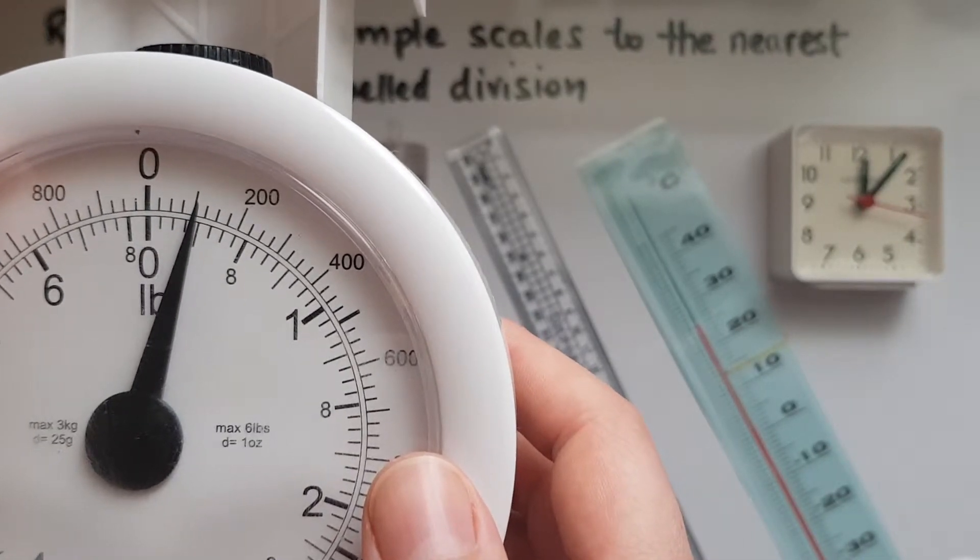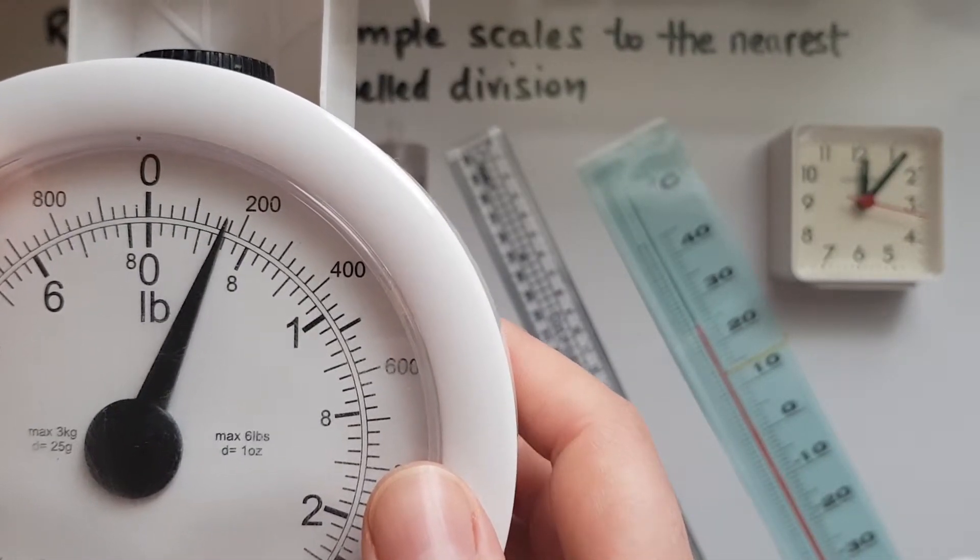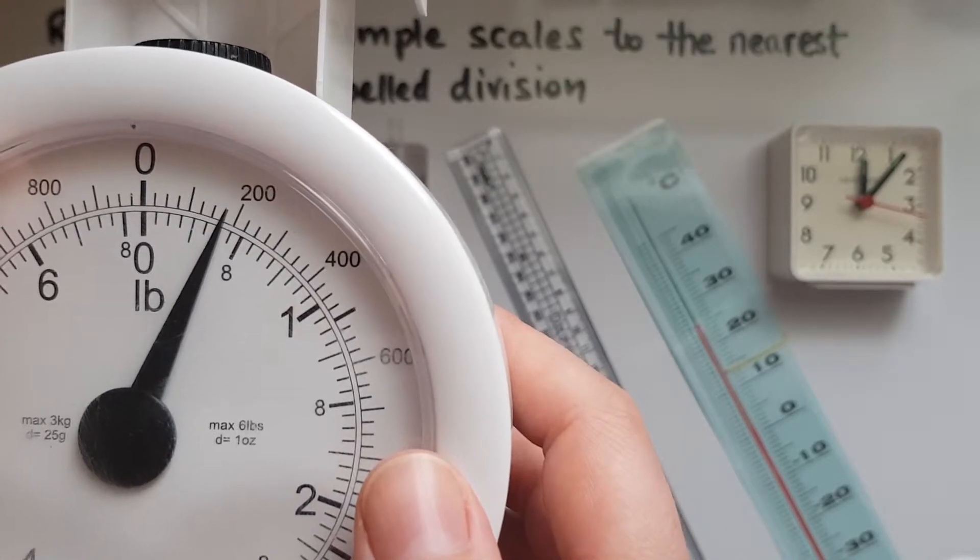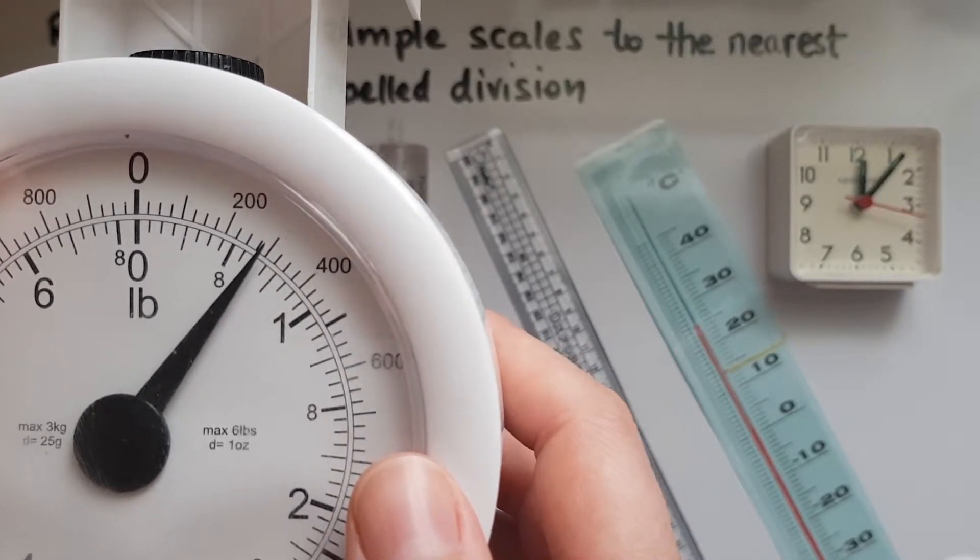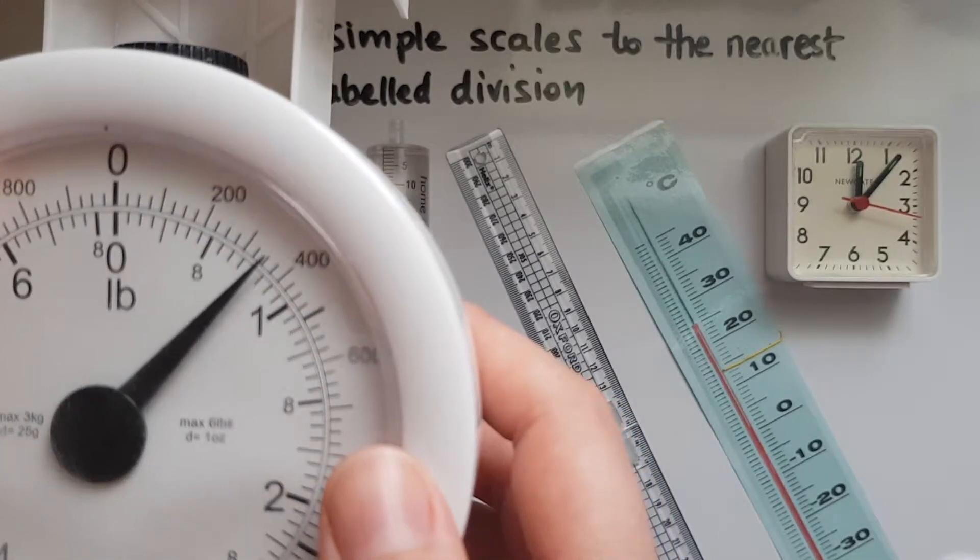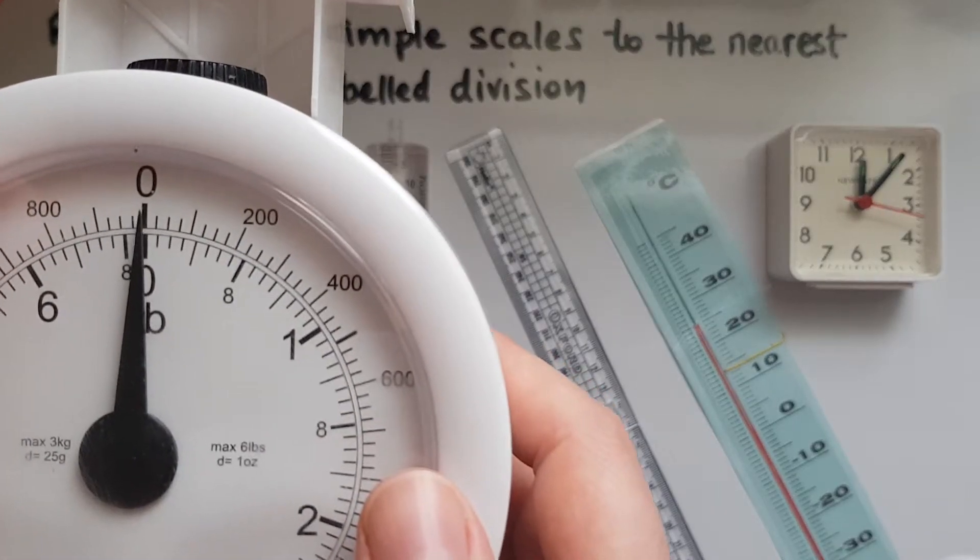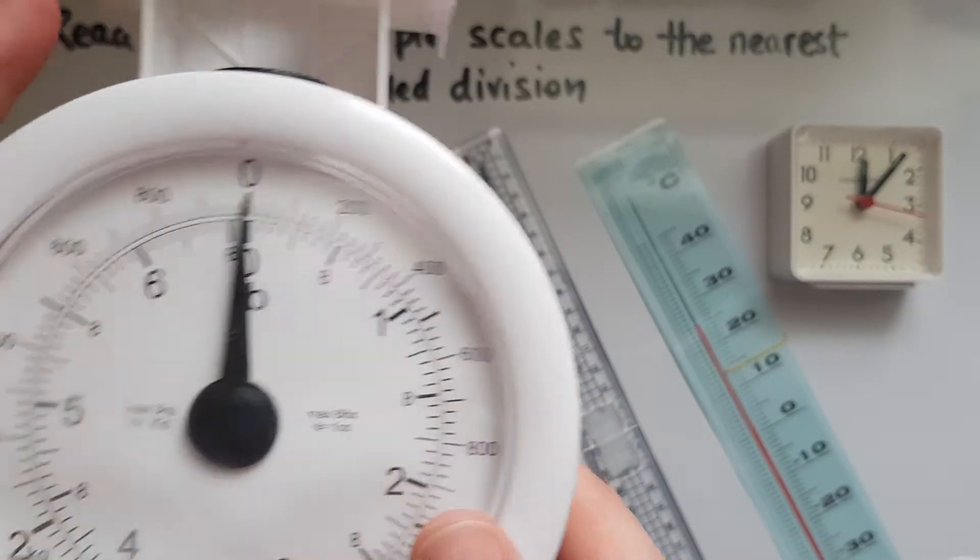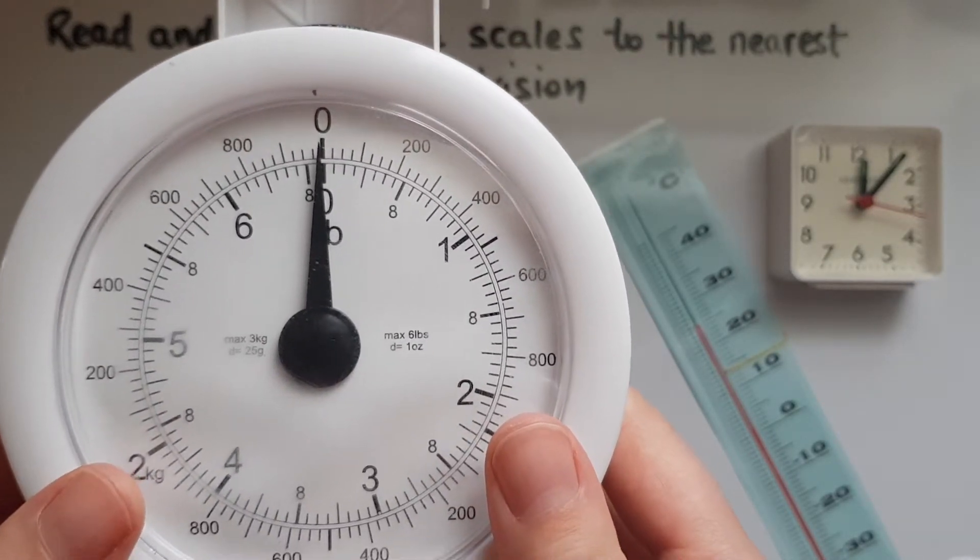This is 1, 2, 3 ounces. This is 5 ounces. This is 8, 10, 12 and so on. So in terms of the scale, that's how you decide.